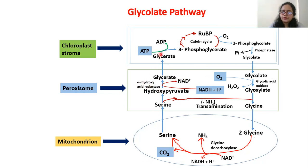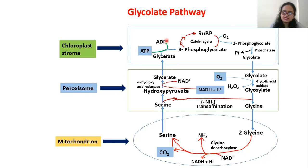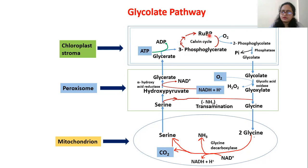The glycerate molecule comes into the chloroplast stroma and converts into 3-phosphoglycerate — a phosphate group is added to glycerate using ATP. One ATP molecule is utilized at this step. So in total, one ATP and one NADH molecule are utilized, one CO2 molecule is produced in mitochondria, and two oxygen molecules are consumed — one in the chloroplast stroma and one in the peroxisome. This 3-phosphoglycerate enters the Calvin cycle and regenerates RUBP.